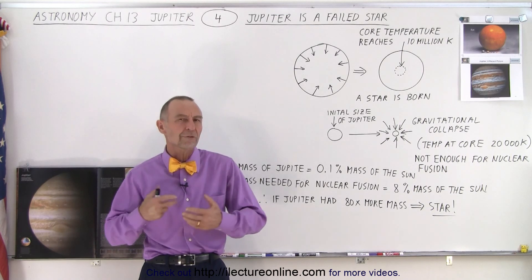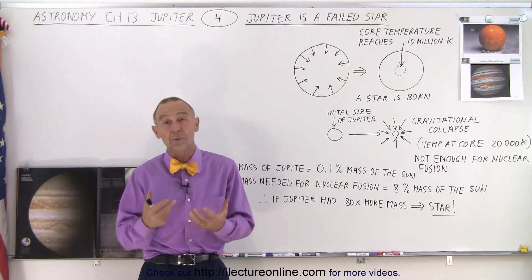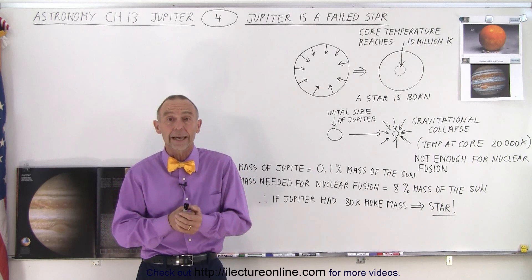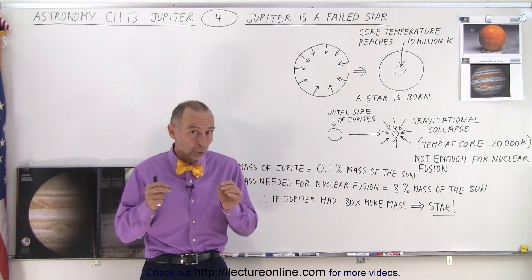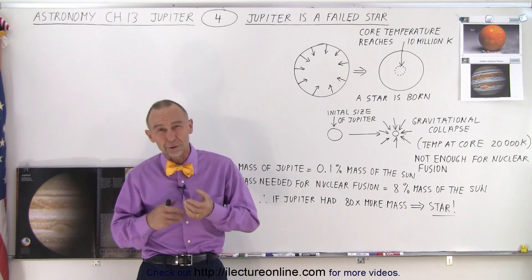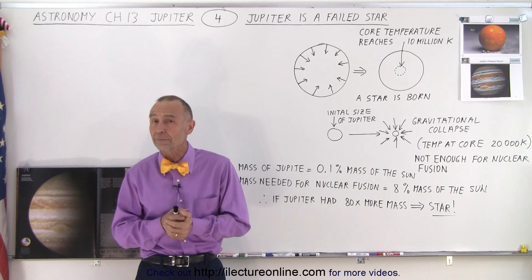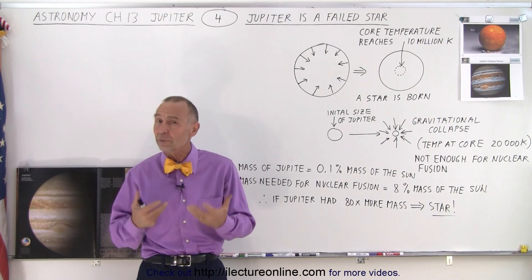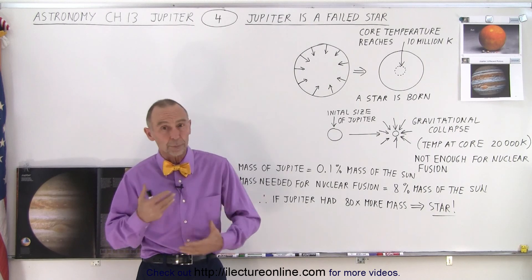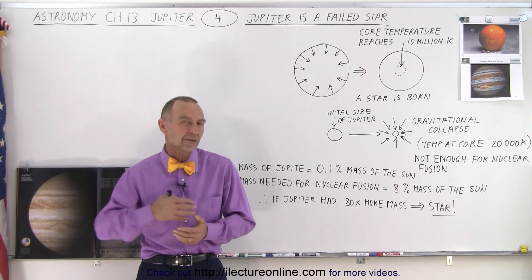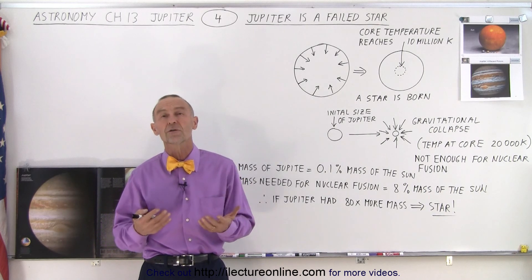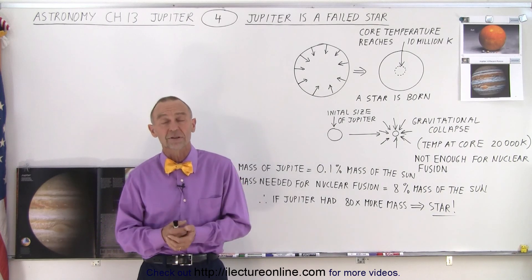So what would have happened if Jupiter was bigger? Well then Jupiter would have become a star and this solar system would have had two stars in it. And probably the Earth may not have had life on it, because that would have created a strange circumstance where the orbit of the Earth may have been such that the variation in temperature would have been too large for life to exist.